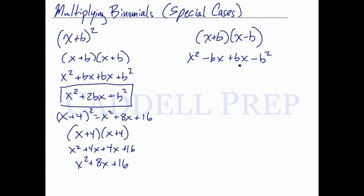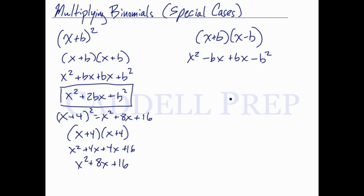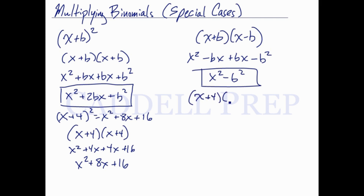When we combine like terms, these actually cancel out. So we have x squared minus b squared. So if we had x plus 4 times x minus 4, we just have x squared minus 4 squared, so minus 16.